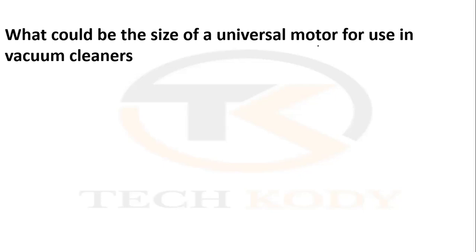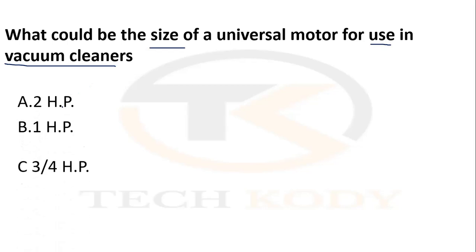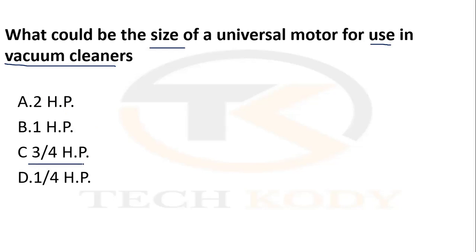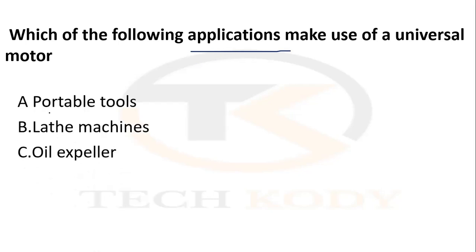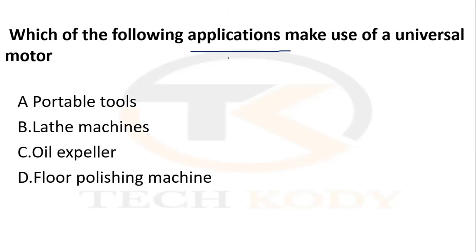What would be the size of a universal motor for use in vacuum cleaners? The size of the universal motor used in vacuum cleaners is 3/4 HP. Regarding applications, the universal motor is used in portable tools, plate machines, floor polish machines, and similar devices. Portable tools are a key application of these universal motors.